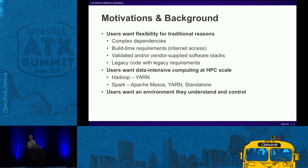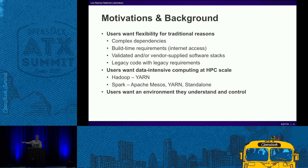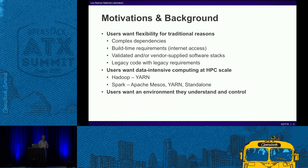Users also want an environment they understand and control. We run TOS, but users are running Ubuntu or Debian Jessie — something far ahead of where we are today. Our current TOS distribution is based on Red Hat 6, which looks ancient to our users. It has old versions of everything. One of the number one requests I hear is: why are we still running Python 2.6? Well, it's because we're on Red Hat 6.